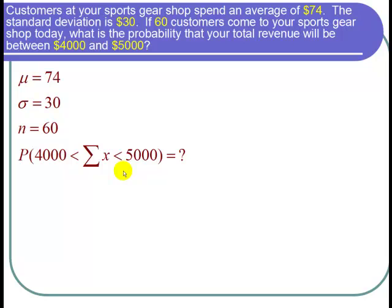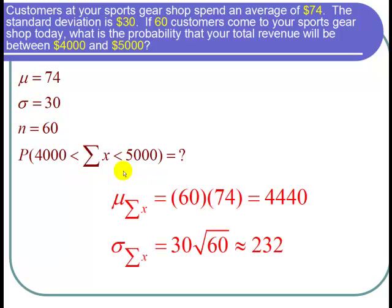Let's use the central limit theorem for sums, which says that the mean of the sum equals n times μ, and the standard deviation of the sum equals σ times the square root of n.